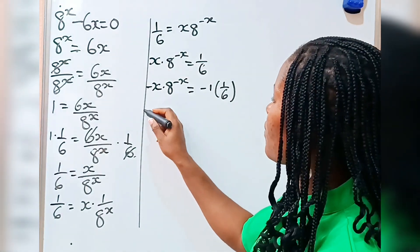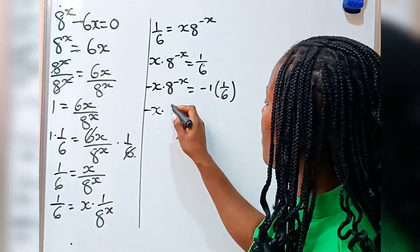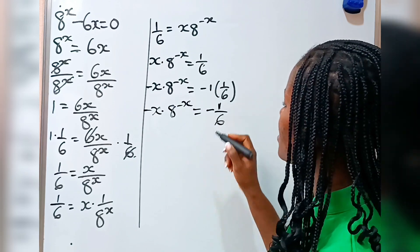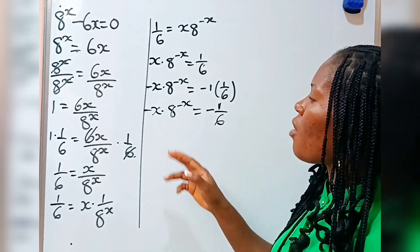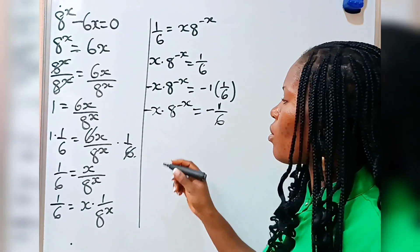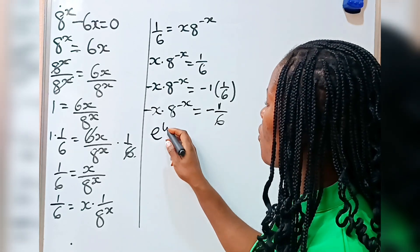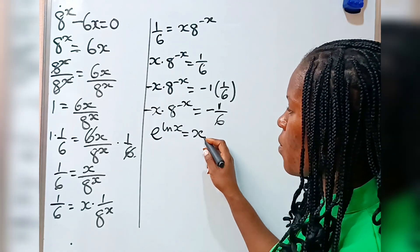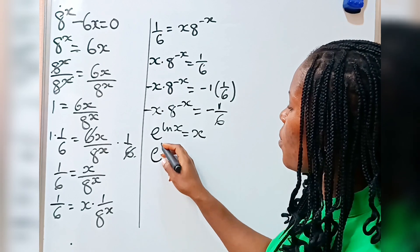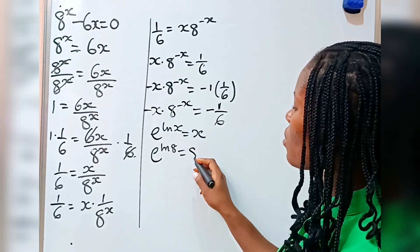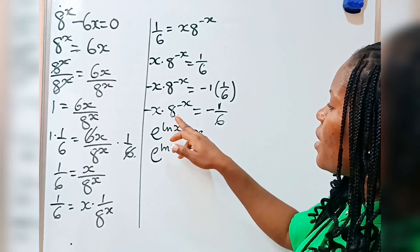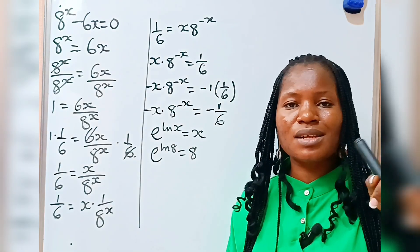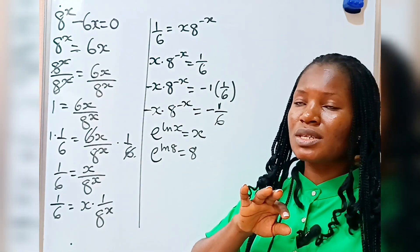So this is what we have now: minus x multiplied by 8 to the power of minus x is equal to minus 1 over 6. Now at this point, recall that when you have e to the power of ln x, that this is equal to x. So that means e to the power of ln x is also equal to 8. So I am going to replace this 8 with e to the power of ln 8. But before that, let me show you why I am doing all these things.